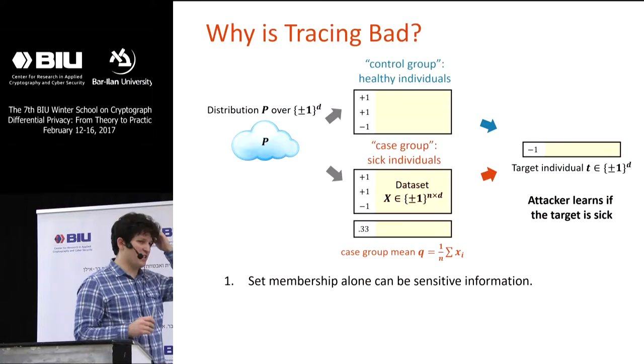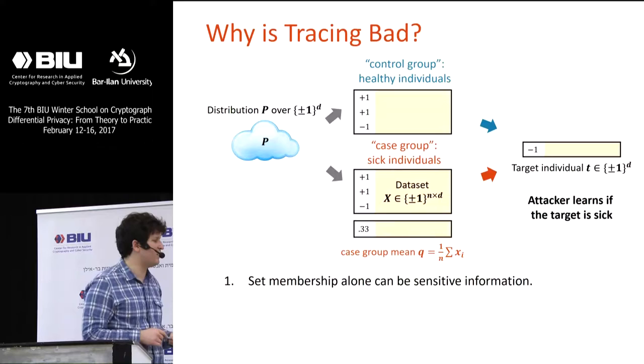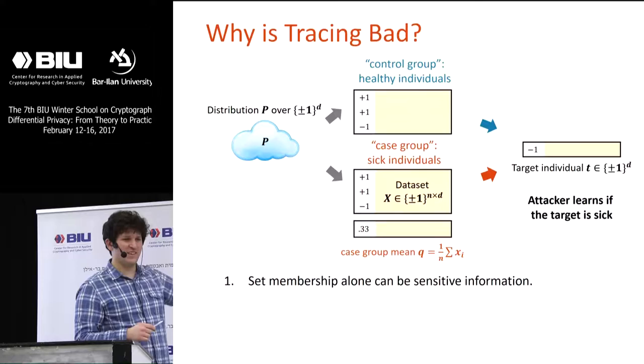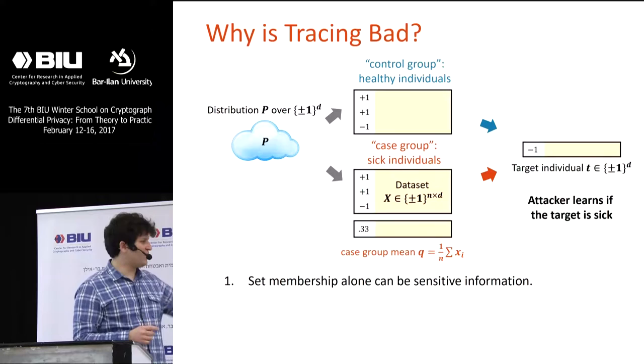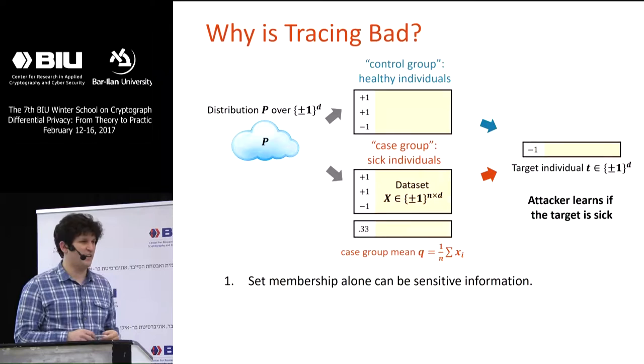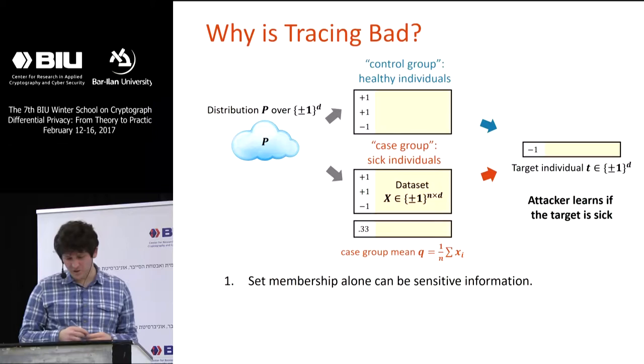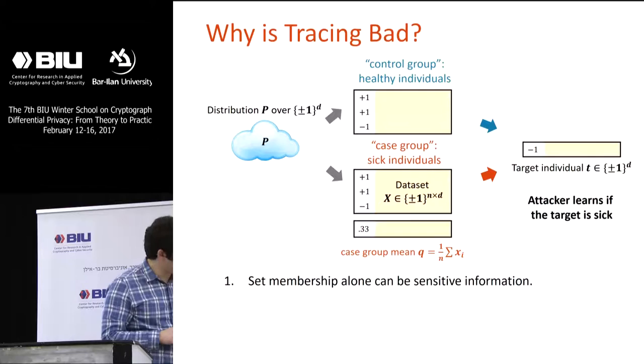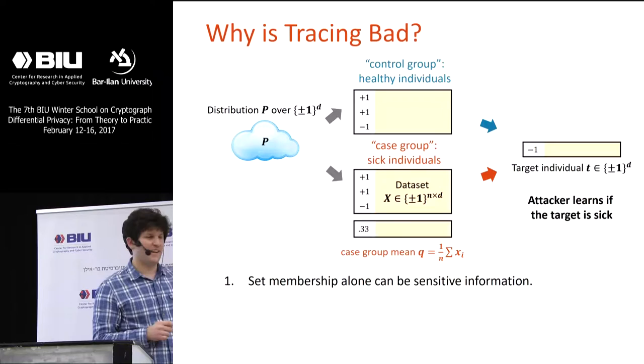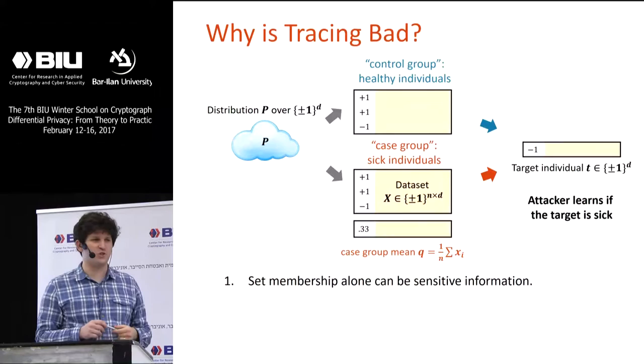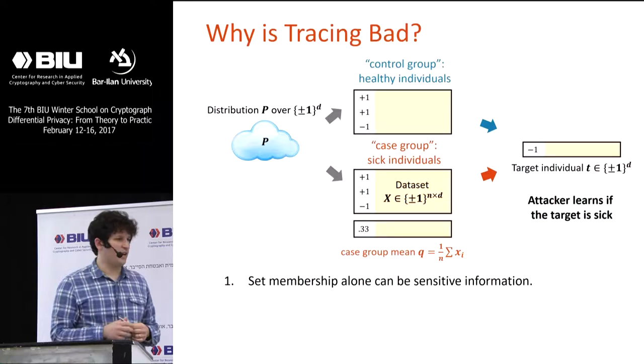The first thing to convince ourselves of is that membership in the dataset can be sensitive information. Usually when you talk about privacy breaches, you're talking about learning someone's data. Here, I have the target individual's data — the only thing remaining to learn is whether they're in the dataset. But that can itself be data. For example, in the Homer et al. paper, membership in the dataset is a proxy for membership in a case group of sick individuals whose genomes you're studying, versus a control group of healthy individuals.